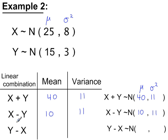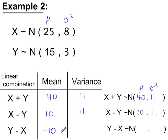The normal variable y minus x will have a mean which is the mean of y minus the mean of x. So in this order, 15 minus 25, giving a mean of minus 10. And for variances, you only ever add them, so that's still 11.